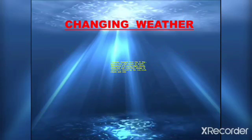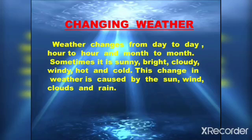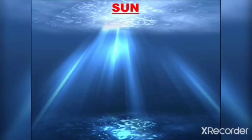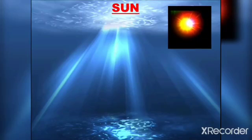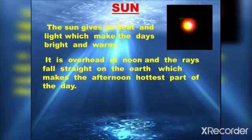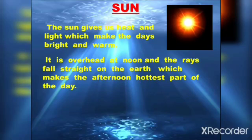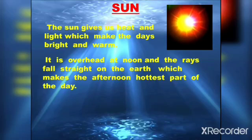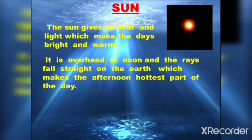Changing weather: weather changes from day to day, hour to hour, and month to month. Sometimes it is sunny, bright, cloudy, windy, hot, and cold. These changes in weather are caused by the sun, wind, clouds, and rain. The sun gives us heat and light which make the days bright and warm. The sun is overhead at noon time and the rays fall straight on the earth, that's why the afternoon is the hottest part of the day.